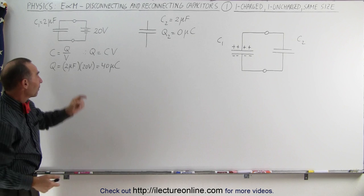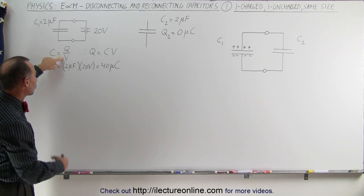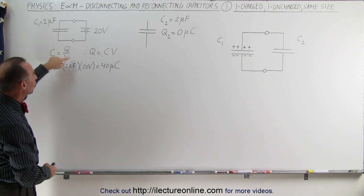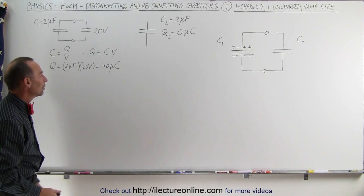Using the definition of capacitance, we know it's equal to the ratio of the charge of the capacitor divided by the voltage across the capacitor. We can then solve for the charge, which in this case would be equal to 40 microcoulombs.